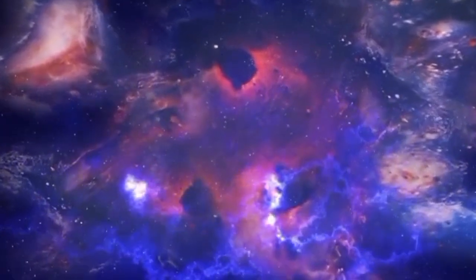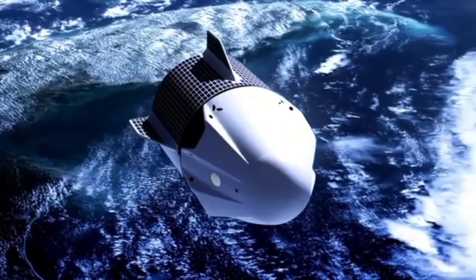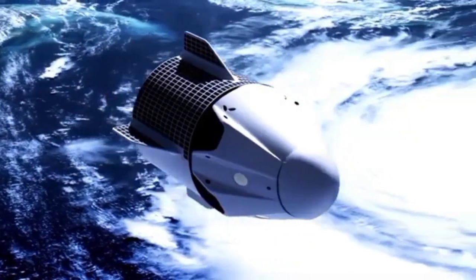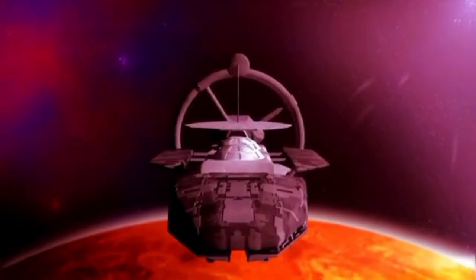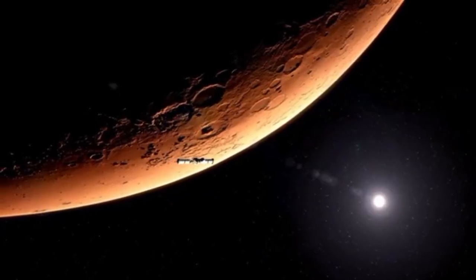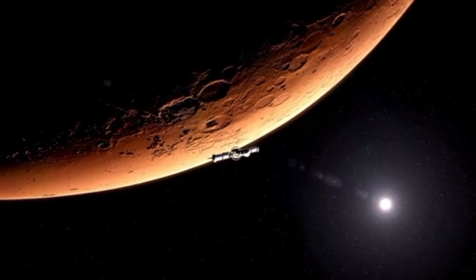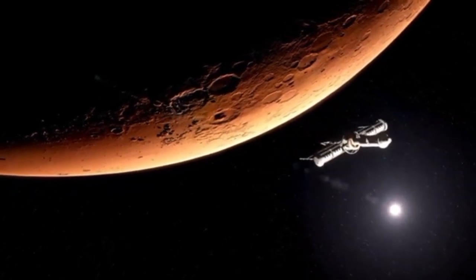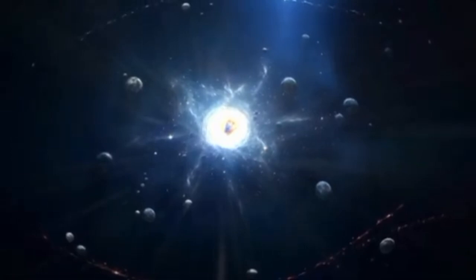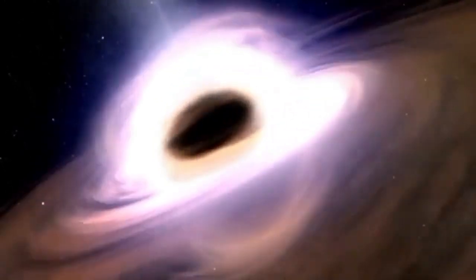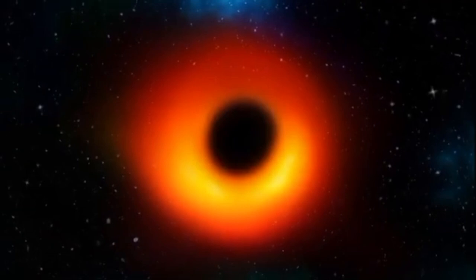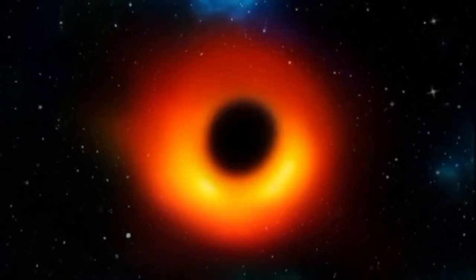Black holes have three distinct layers. One, the event horizon—the boundary beyond which nothing can return. Once an object crosses this threshold, it is inevitably dragged into the void. Two, the photon sphere—a region where light orbits the black hole in circles. Any light entering this zone becomes trapped by the black hole's gravity. Three, the singularity—the core of the black hole, where all matter is compressed into an infinitely small point. Here, the known laws of physics break down, making it impossible to predict what happens within.